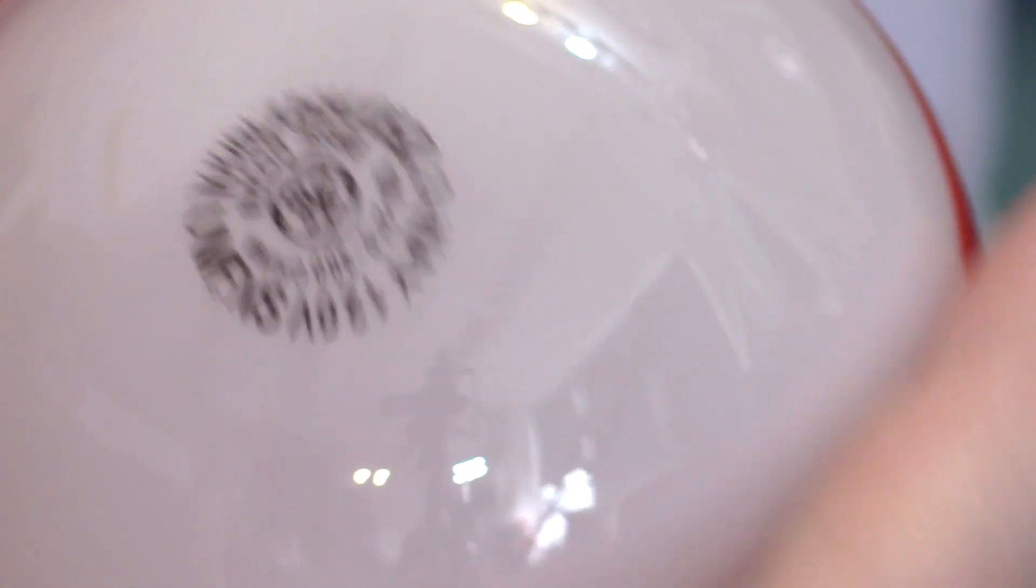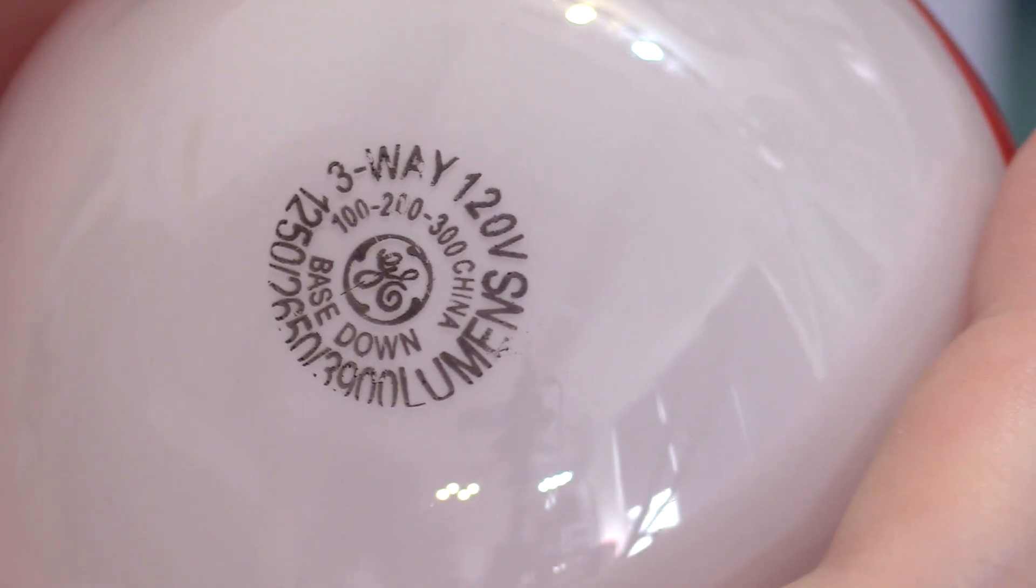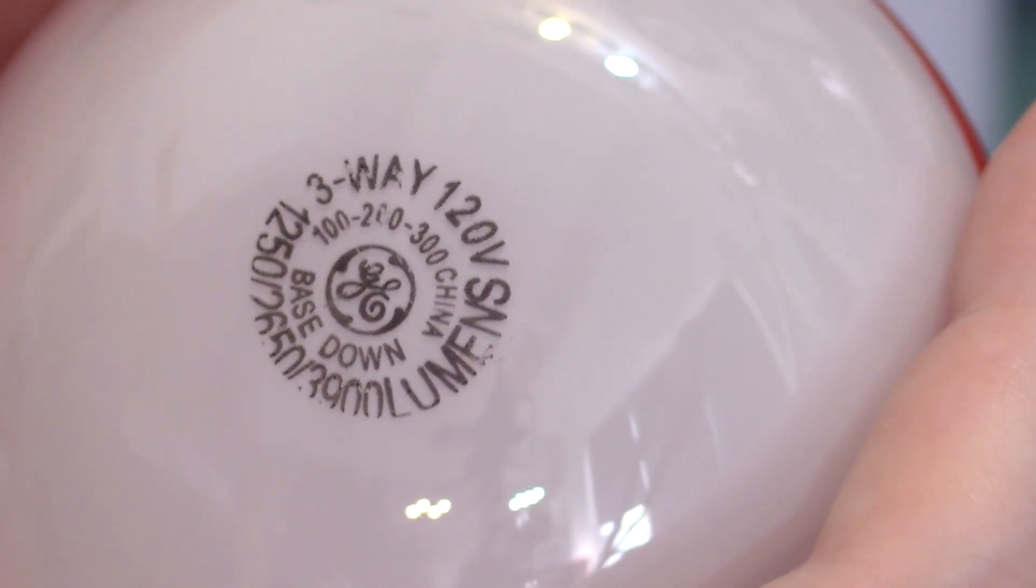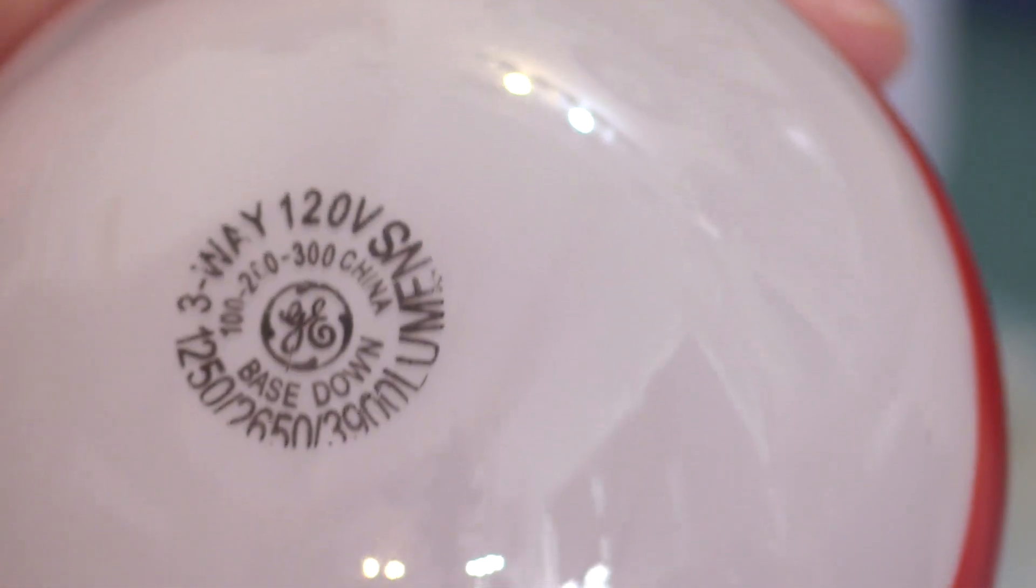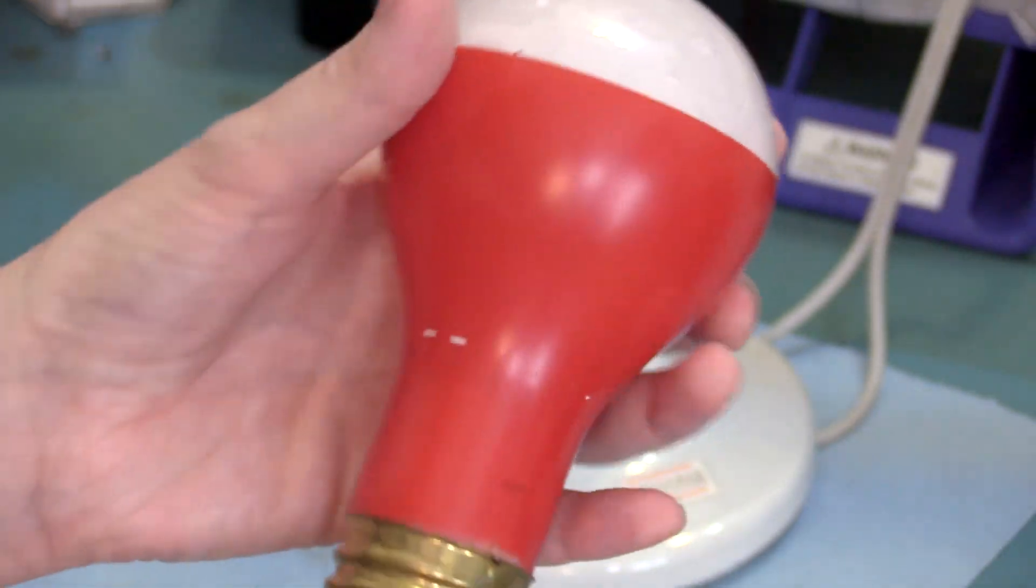So yeah, but even on low-power, let's see what we've got here. Low-power is still 100 watts. So it's 100, 200, 300. So three-way, 120 volts. 3,900 lumens.